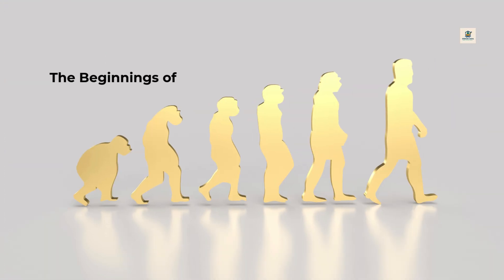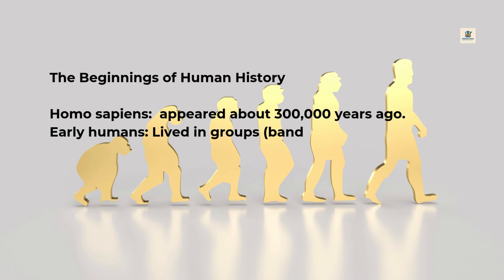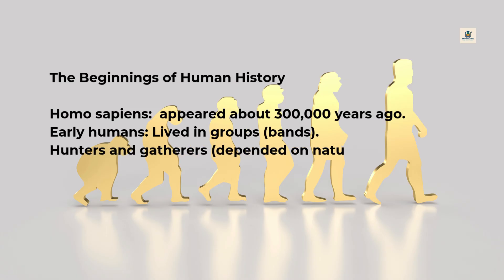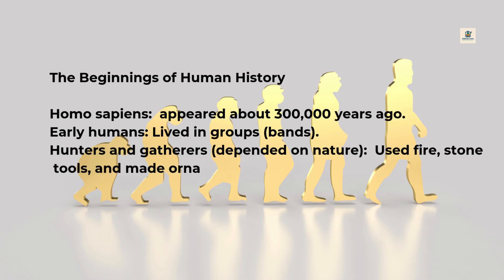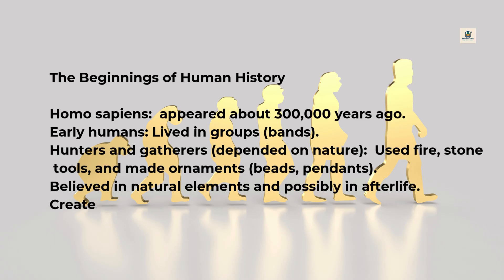The beginnings of human history: Homo sapiens appeared about 300,000 years ago. Early humans lived in groups called bands and were hunters and gatherers who depended on nature. They used fire and stone tools, made ornaments, beads, and pendants, believed in natural elements and possibly in afterlife, and created rock art in caves — paintings of animals and humans.